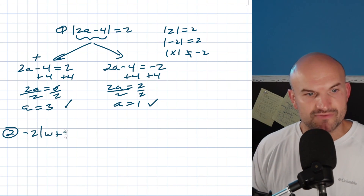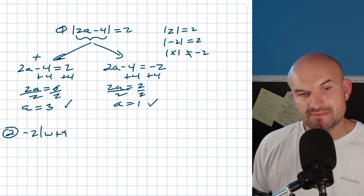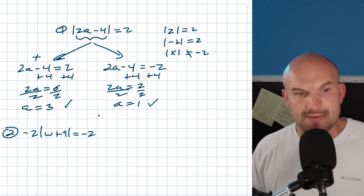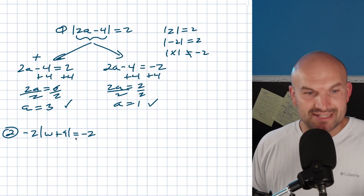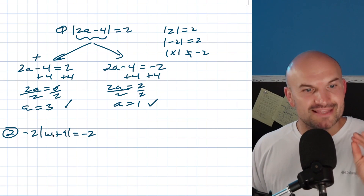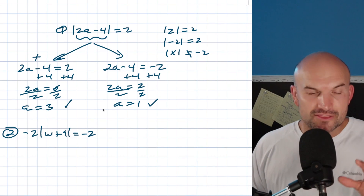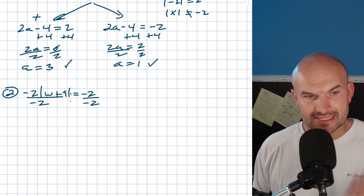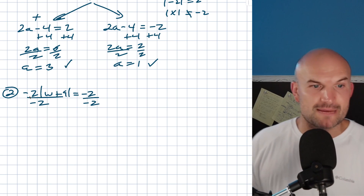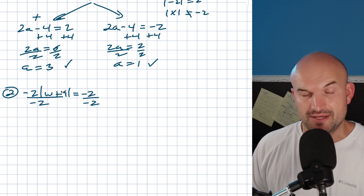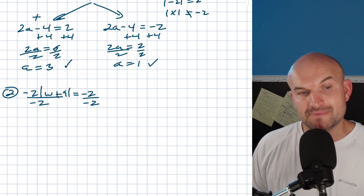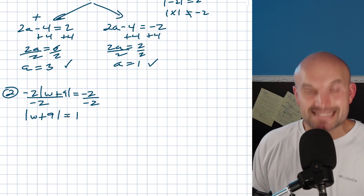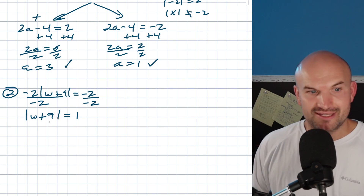Now what if we have something outside our absolute value? For instance: negative 2 times the absolute value of w plus 9, equals negative 2. A common mistake is seeing it equals negative 2 and thinking there's no solution — but the absolute value is not isolated yet. The first thing you always want to do is isolate the absolute value. Divide both sides by negative 2, and you get the absolute value of w plus 9 equals positive 1. So that's going to work.